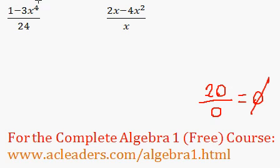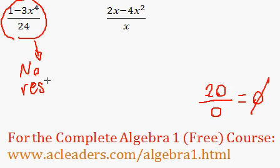Let's see, let's work on this rational expression first. We have 1 minus 3x to the 4 over 24. Because we don't have a variable on the bottom here, there's actually no way to get a 0 in the denominator. Therefore, this rational expression has no restrictions.